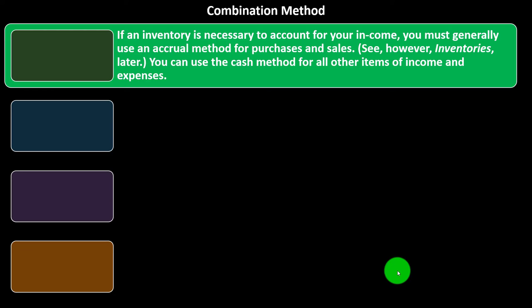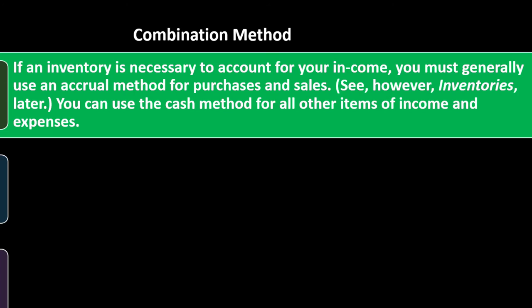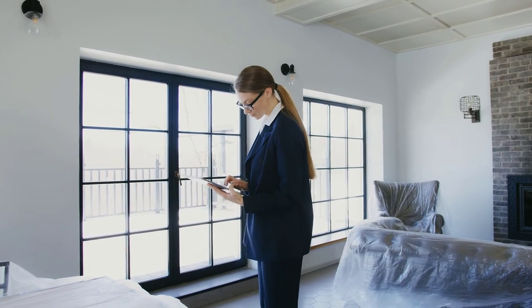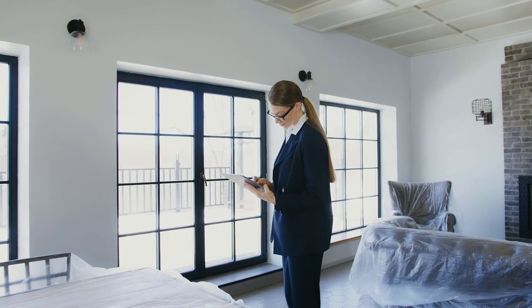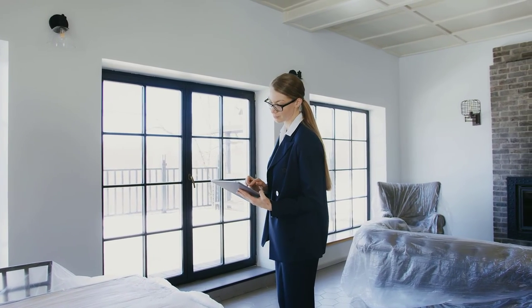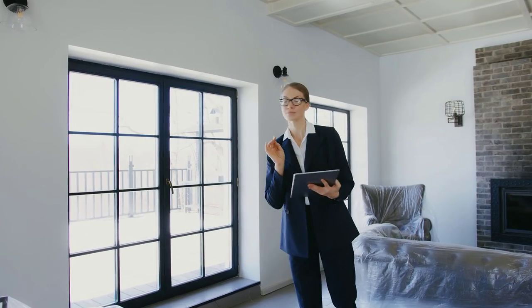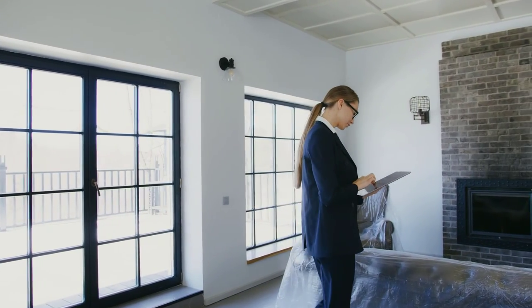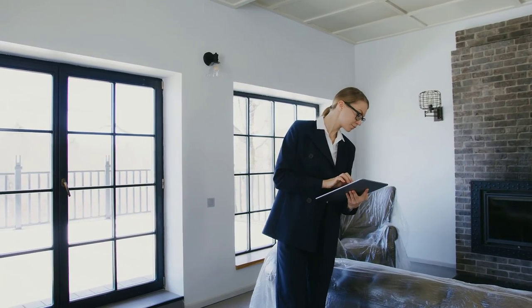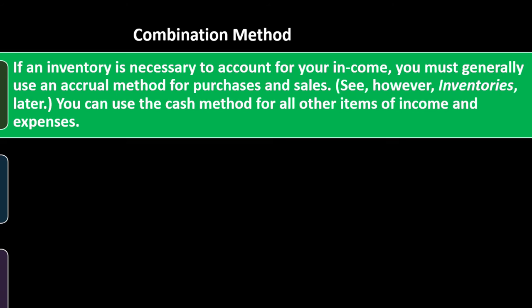However, the following restrictions apply. If inventory is necessary to account for your income, you must generally use an accrual method for purchases and sales — though there could be exceptions; see inventories later. You can use the cash method for all other items of income and expenses. If you have inventory, you're typically tracking it on the books as an asset, which means you're using an accrual method. Be careful if you have inventory to make sure you're tracking it correctly, because if you change methods in the future that can cause problems on the tax side.